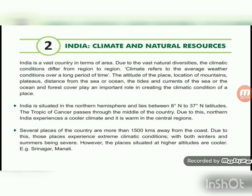Several places of the country are more than 1,500 kilometers away from the coast. Due to this, those places experience extreme climate conditions, with both winters and summers being severe. However, the places situated at higher altitudes are cooler — for example, Srinagar and Manali.